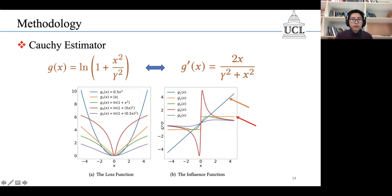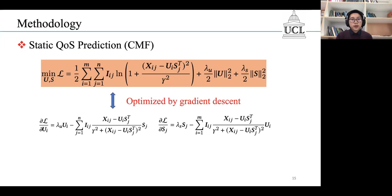Given the precious characteristics of the Cauchy loss, we apply the Cauchy loss to measure the difference between the observations and the predictions. And then we describe this objective function.